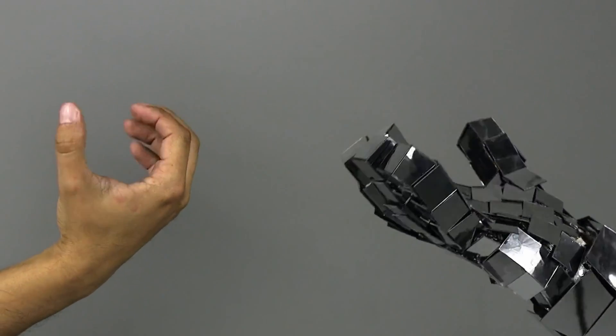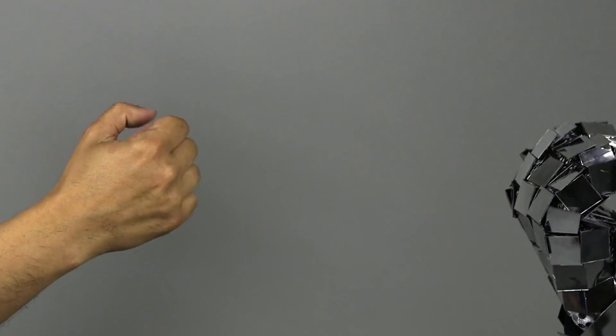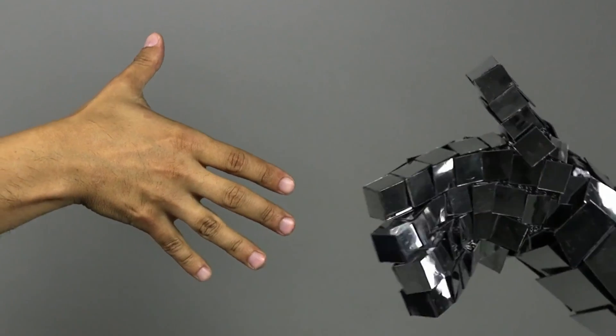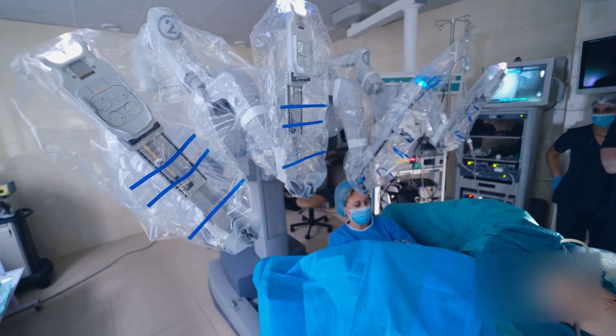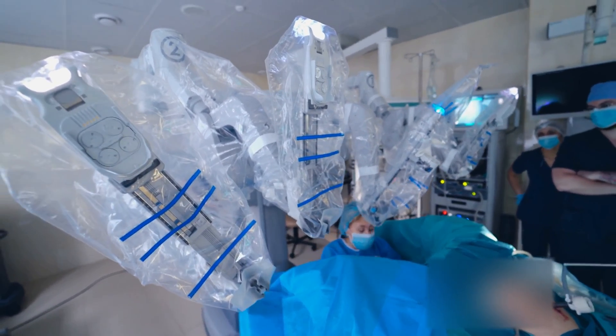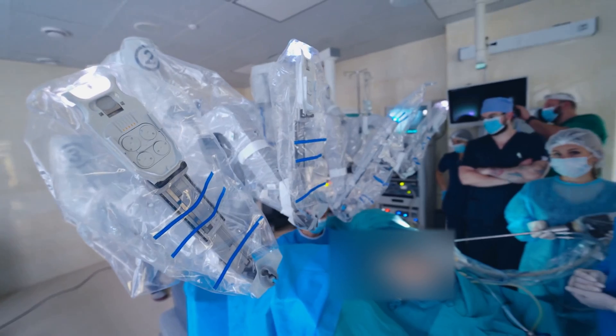Furthermore, in robotics, understanding human pose and movements can be crucial for designing robots that can interact safely and effectively with humans. This is particularly important for robots in assistive roles, such as those used in healthcare or service industries.